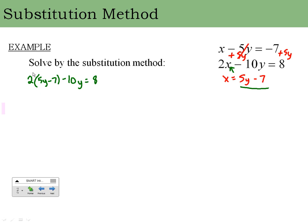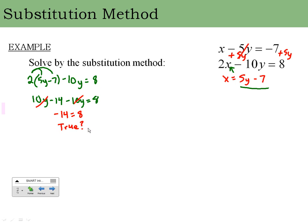I distribute and get 10y minus 14 minus 10y equals 8. Adding like terms, 10y minus 10y cancels out, leaving negative 14 equals 8. This is a special case — is negative 14 equal to 8? Since it's not a true statement, this system has no solution. In general, if your variables cancel and you're left with a false statement, there is no solution.